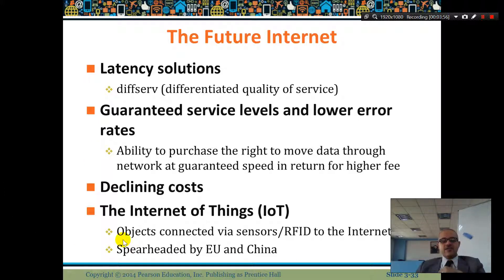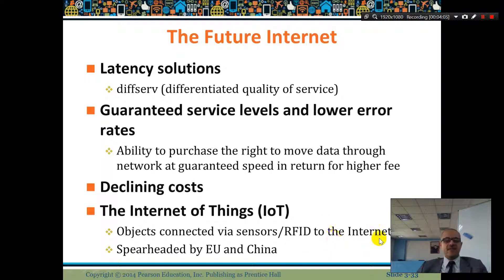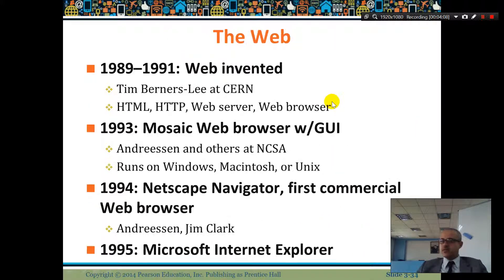We also have declining cost and IoT — Internet of Things. IoT refers to objects connected via sensors and RFIDs to the internet. We talked about this last class.